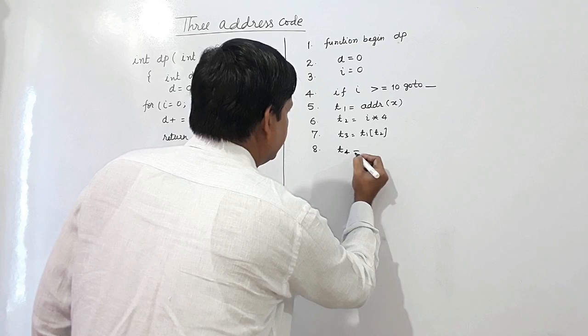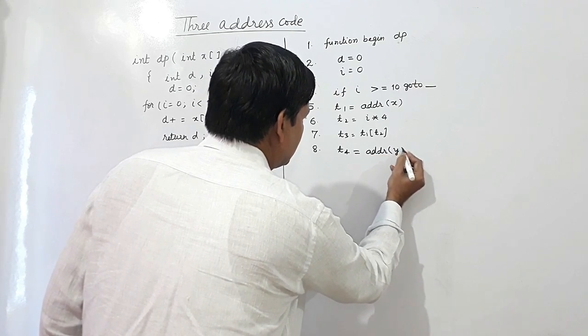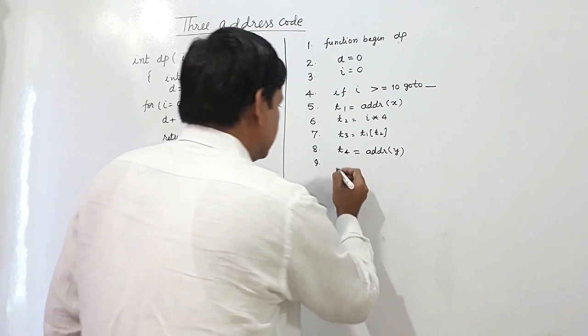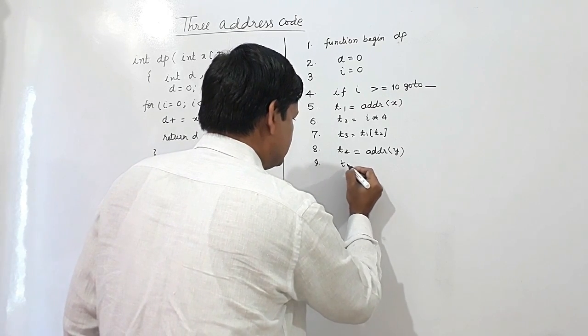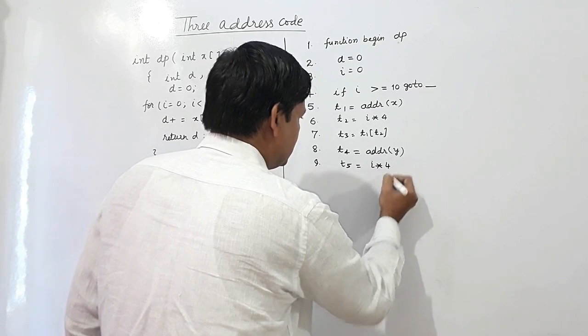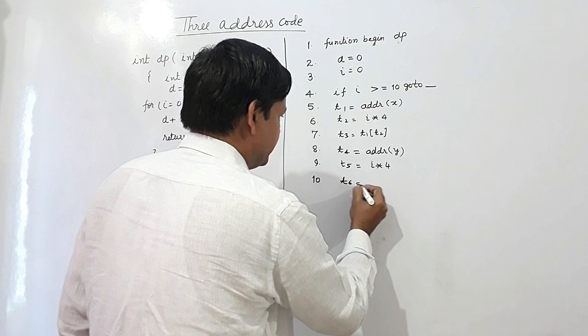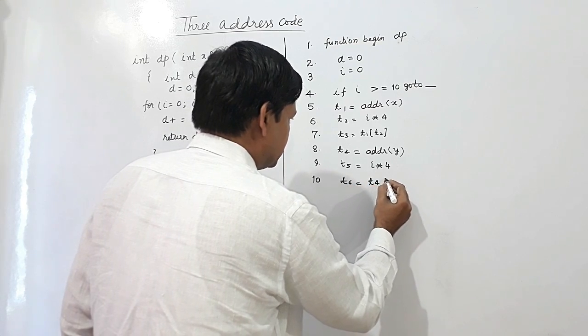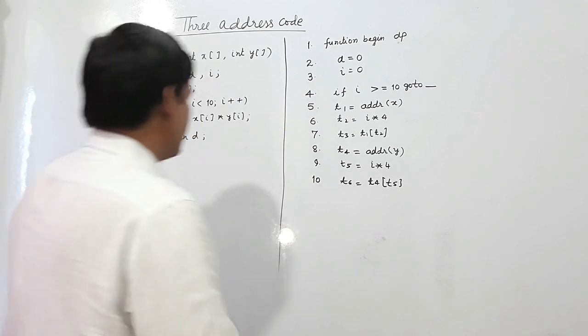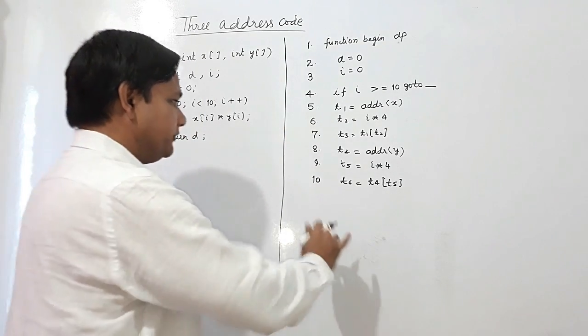t4 is equal to address of y, and t5 will be equal to i into 4. And t6 will be equal to t4 plus t5. These have been evaluated now. Now what are we going to do?